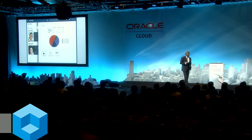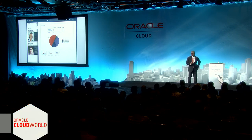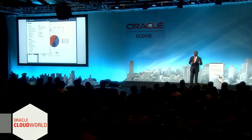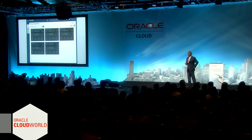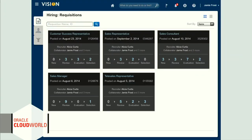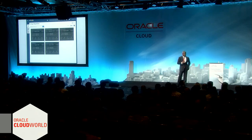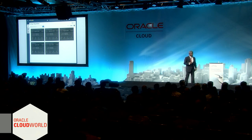Now, let's say you said, hey, I had a whole bunch of job posts out and I'm looking for the status of one of them. You can navigate up to the top-level menu and look at requisitions, because they are your job posts. You have a variety of different ones — customer success representative, sales representative, and so on.